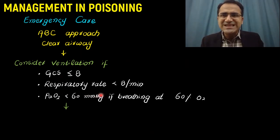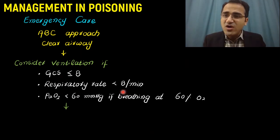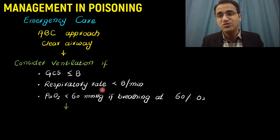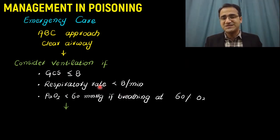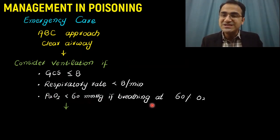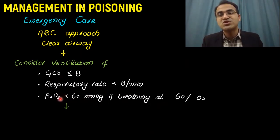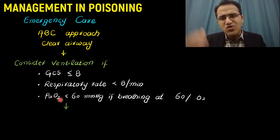If the respiratory rate is less than 8 per minute, they are heading toward respiratory failure and can die of respiratory arrest — consider intubation. And if the partial pressure of oxygen is less than 60 mmHg while the patient is breathing 60% oxygen, meaning their PaO2 is dropping despite supplemental oxygen, that patient needs ventilation.